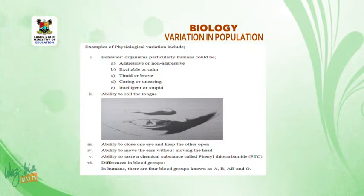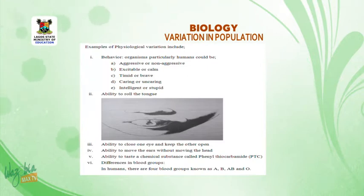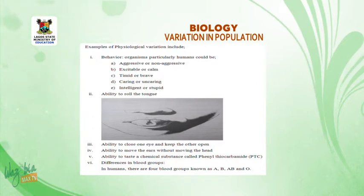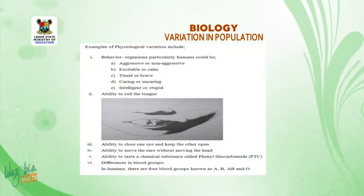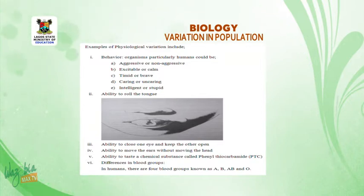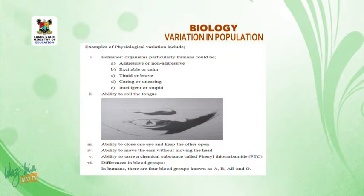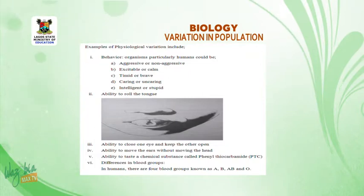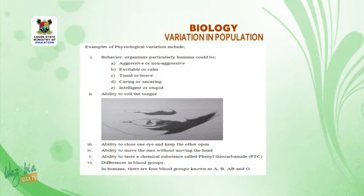Examples of physiological variation include: 1. Behavior — organisms, particularly humans, could be aggressive or non-aggressive, excitable or calm, timid or brave, caring or uncaring, intelligent or stupid. 2. Ability to roll the tongue. 3. Ability to close one eye and keep the other open. 4. Ability to move the ears without moving the head. 5. Ability to taste a chemical substance called phenylthiocarbamide (PTC). 6. Differences in blood groups — in humans, there are four blood groups known as A, B, AB, and O.